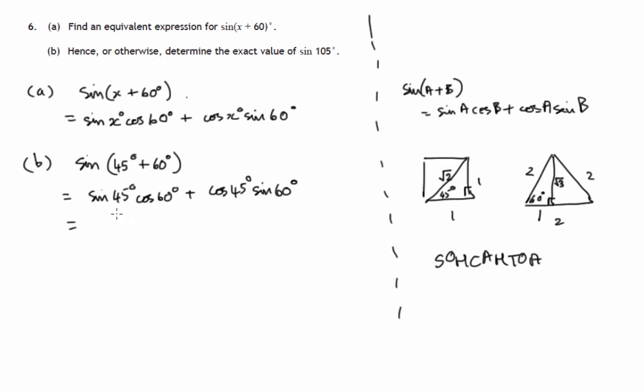So opposite over hypotenuse: sin(45°) = 1/√2. Cos(60°), adjacent over hypotenuse, that's 1/2. Cos(45°): 1/√2. And sin(60°): √3/2.